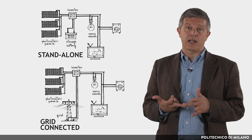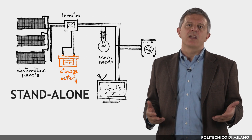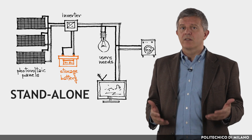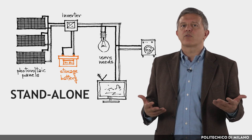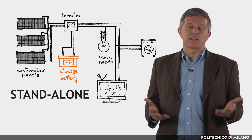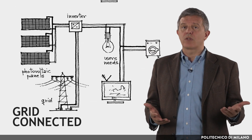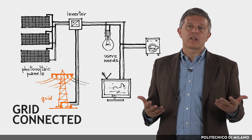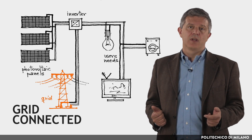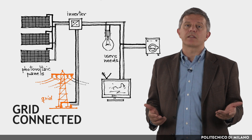Depending on the type of use, photovoltaic systems can be divided into two categories: stand-alone and grid-connected. In the stand-alone type, a storage system such as a battery is interposed between the generator and the inverter. This stores the electricity when production exceeds consumption and makes it available when consumption exceeds production. When systems are connected to the grid, all the energy that is not directly used on site is fed into the grid. During periods of little or no sunlight, the grid itself integrates the user's needs.